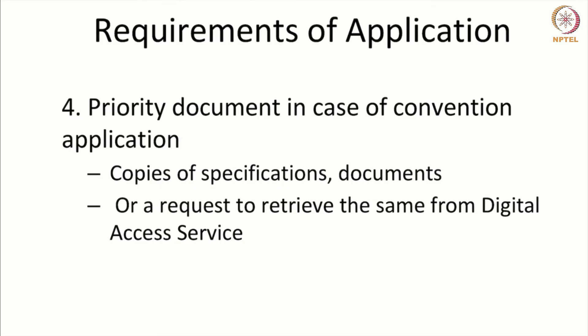The fourth thing the applicant has to file along with the application is the priority document. In some cases there could be a priority document which is a document filed in a foreign patent office. When you follow the convention application route or the PCT route, you file based on the priority document, get a priority, and then enter different countries. Whatever priority document was used in the case of a convention application, copies of that have to be provided to the Indian patent office.